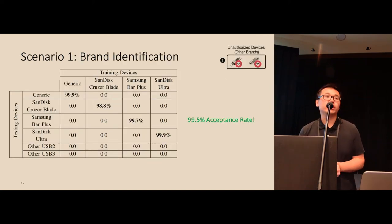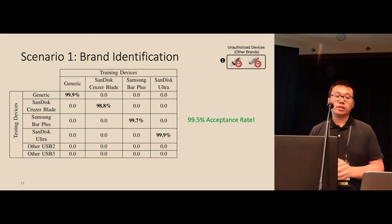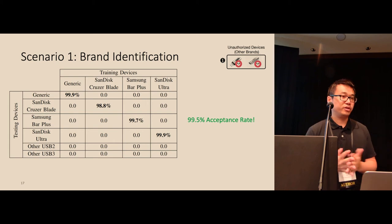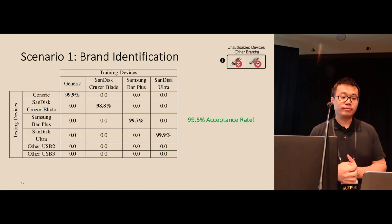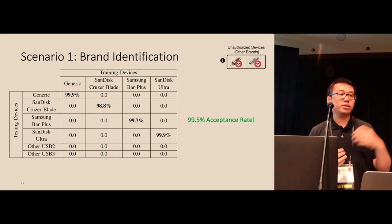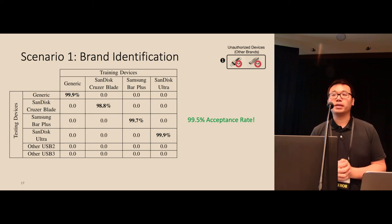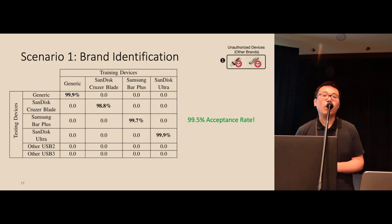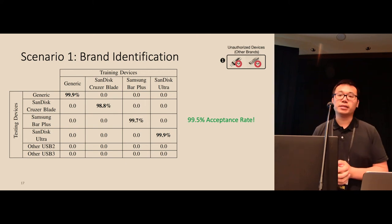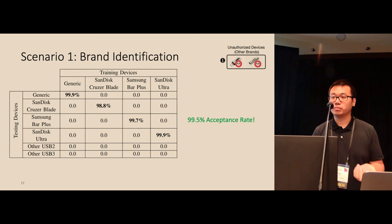Here are some results. For the first scenario, brand identification, we find that Timeprint performs really well. We have more than 99% acceptance rate, which means we can almost always accept a device if it belongs to the authorized model or brand. At the same time, it will always correctly reject the device if it does not belong to the authorized device model.